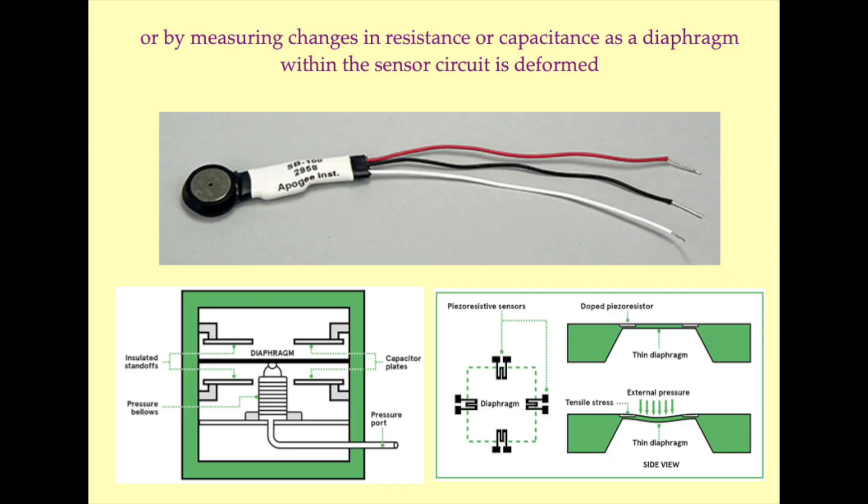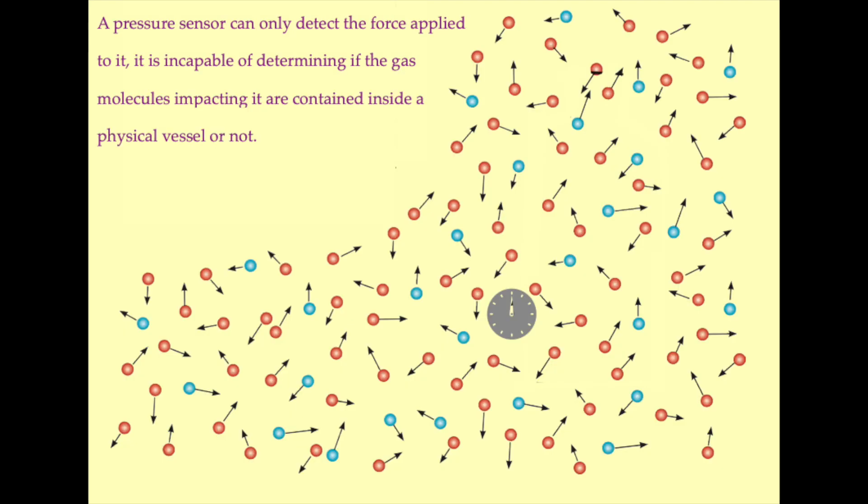Microelectromechanical barometers work by detecting the change in capacitance or resistance as a diaphragm is deformed by gas pressure. Regardless of the style of gas pressure sensor being employed, the sensor is only sensitive to the impact of gas molecules against its detection surface.